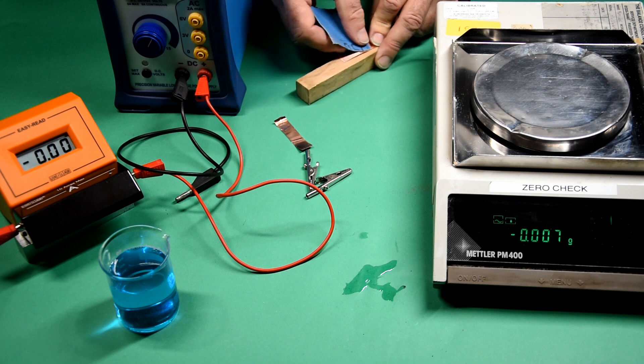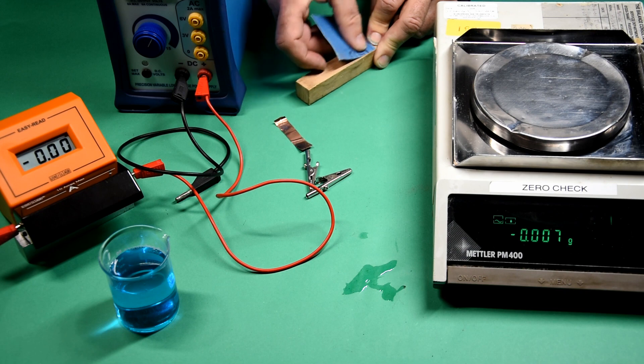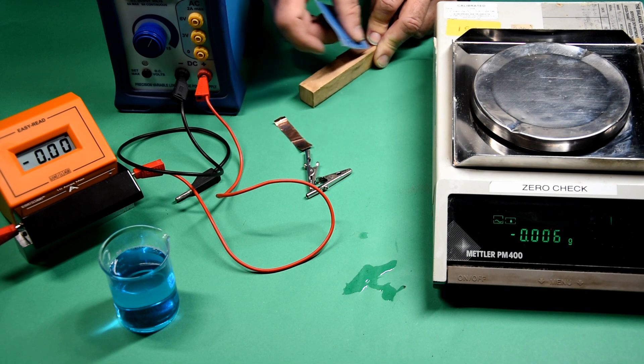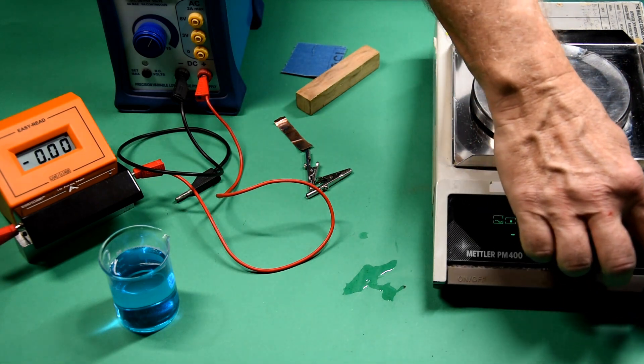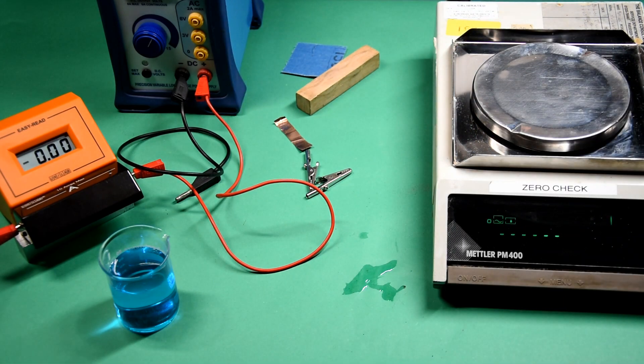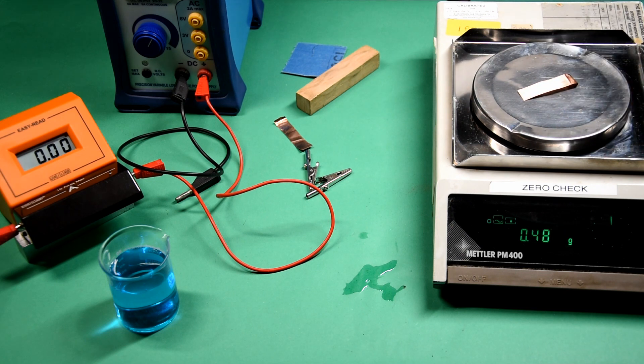The electrodes are cleaned with emery paper - this is to get rid of the copper oxide, which might otherwise prevent a current flowing. The balance is zeroed and the electrodes are weighed. In this case, we're starting with the anode.